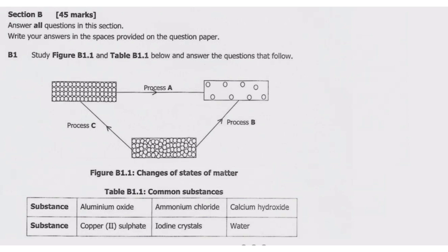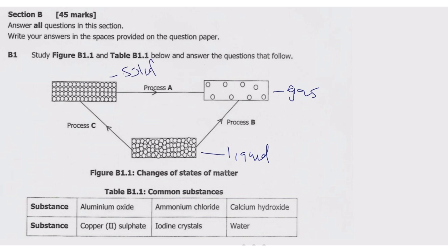Looking at the figure to identify the processes: process A is a change of state. The solid is identified by a regular particle pattern. The liquid has particles not arranged in a clear pattern but closely spaced. Then there is gas. Process A is the direct change of state from solid to gas, which is known as sublimation.